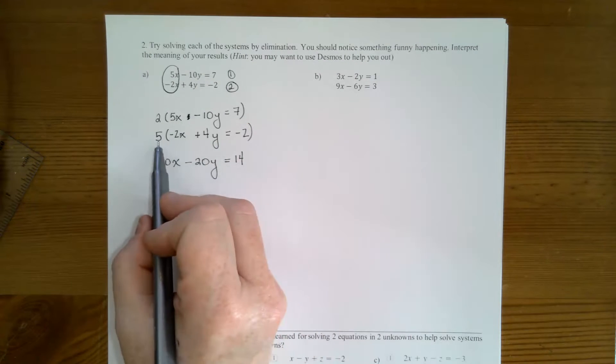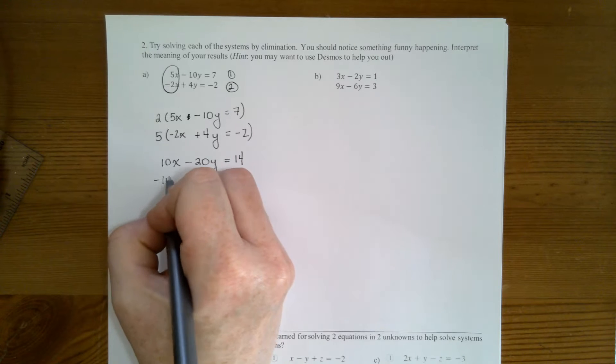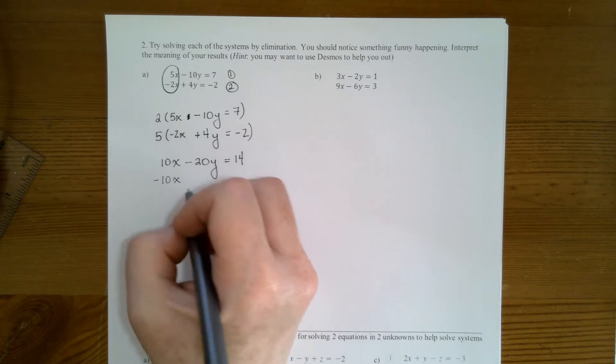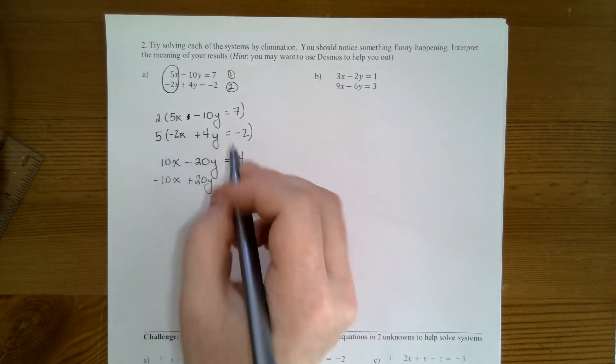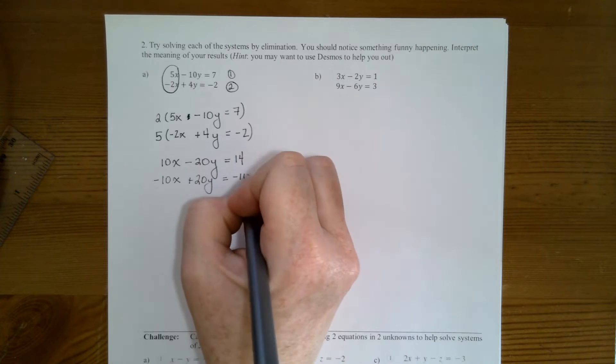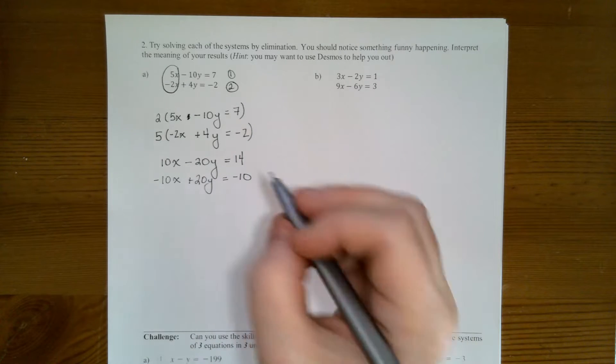And then I'll multiply this one. So 5 times negative 2 is negative 10x. 5 times 4 is 20y. And 5 times negative 2 is negative 10. So now I have two new equations.